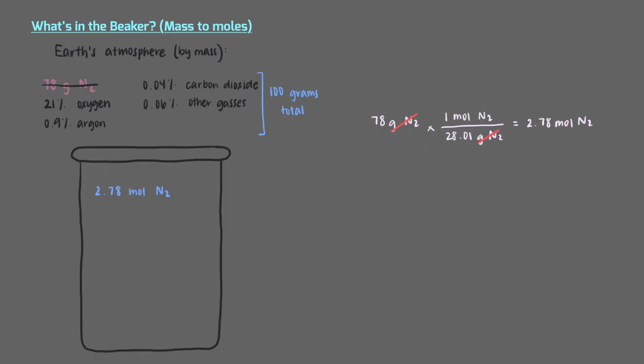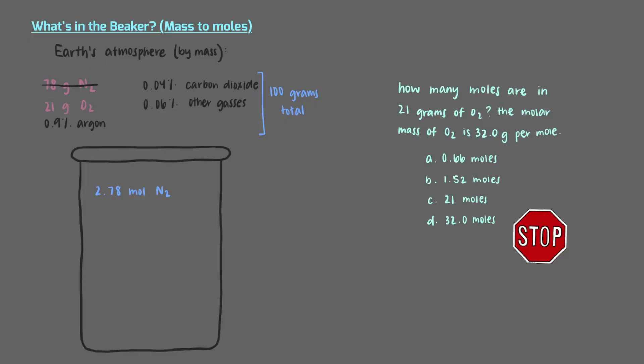Let's do the same thing for the number of moles of oxygen. How many moles are in 21 grams of oxygen? The molar mass of oxygen is 32.0 grams per mole. Like we said, there are 21 grams of oxygen in our sample, and the molar mass of oxygen is 32.0 grams per mole.